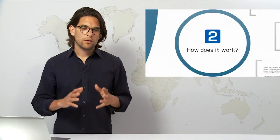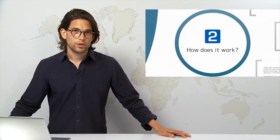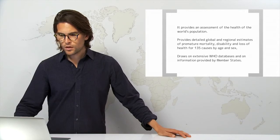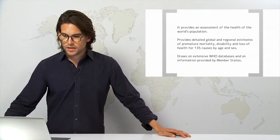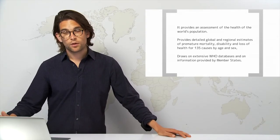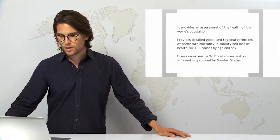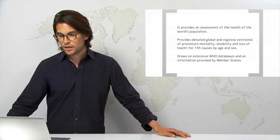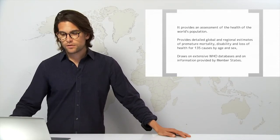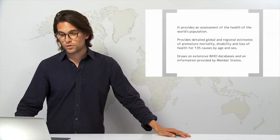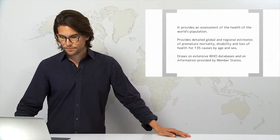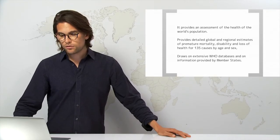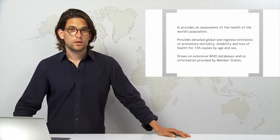So let's have a look now at how the global burden of disease study works in some more detail. First of all, the global burden of disease studies provide an assessment of the health of the world's populations. They provide detailed regional and global estimates for premature mortality, disability and loss of health for 135 causes by age and by sex. They draw on extensive WHO databases and on information provided by the member states.